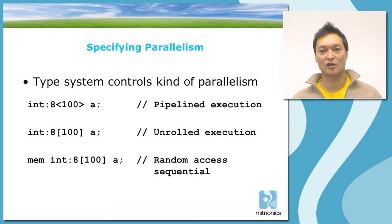And finally, we have an example of a sequential operation. In this case, a memory. The memory allows you to have random access to the elements in contrast to the list, but it only gives you sequential execution. That is, only a single operation can be done on that memory at a time.